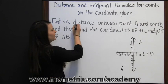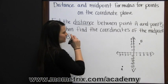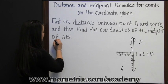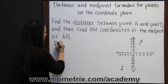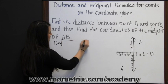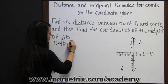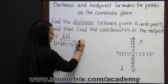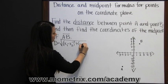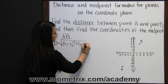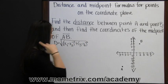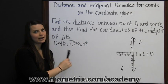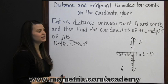First we're going to start by finding the distance between points A and B. The distance formula is the square root of x1 minus x2 squared plus y1 minus y2 squared. That means we need to know what our x1, x2, y1, and y2 are.